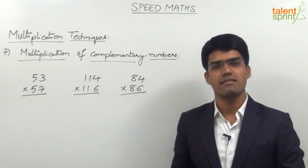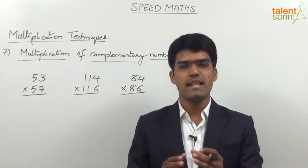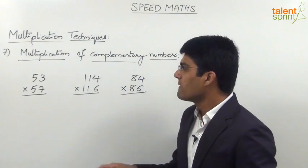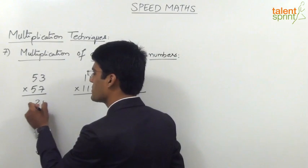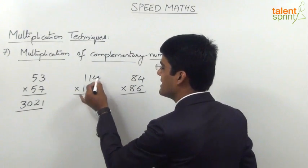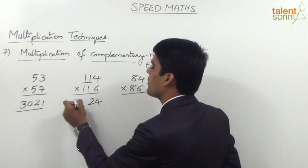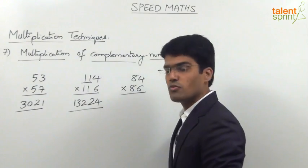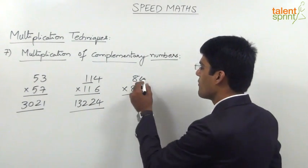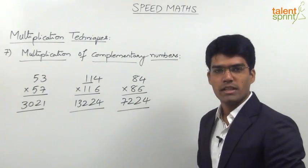Let us now see whether you can apply the concept of complementary numbers properly. Here we have three questions. For 53 into 57: 3 into 7 is 21, and 5 into 6 is 30, so the answer is 3021. For 114 into 116: 4 into 6 is 24, and 11 into 12 is 132, so the answer is 13224. For 84 into 86: 4 into 6 is 24, and 8 into 9 is 72, so the answer is 7224.